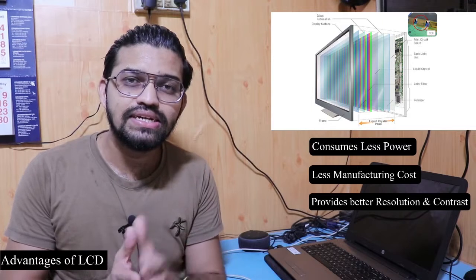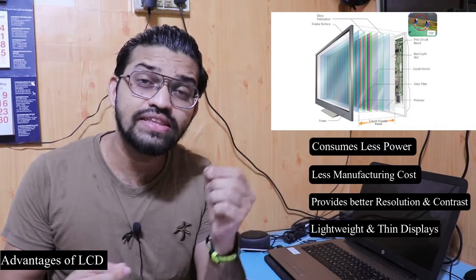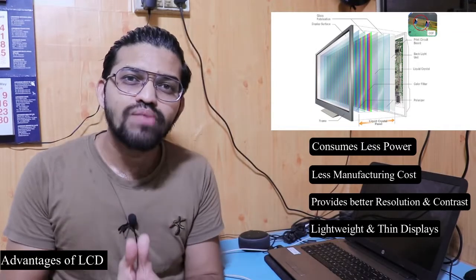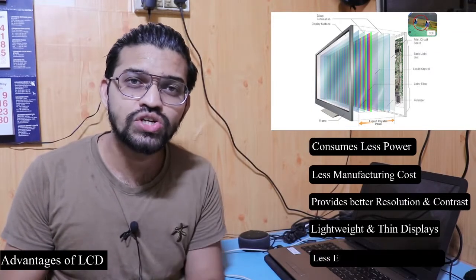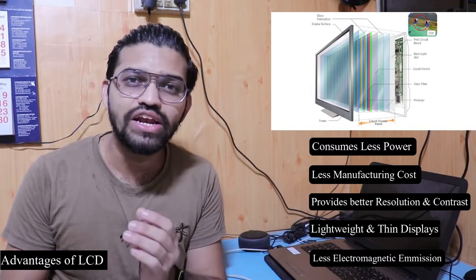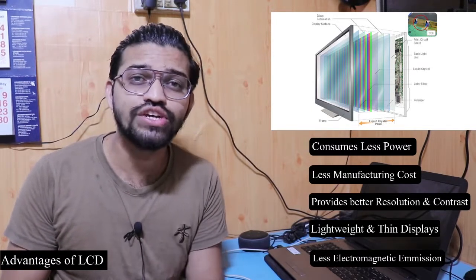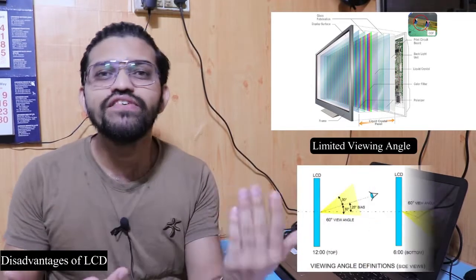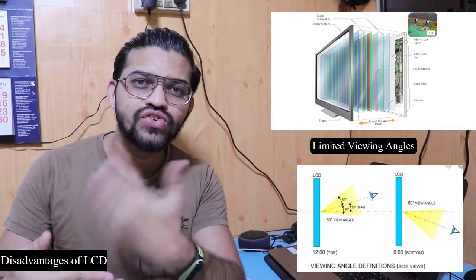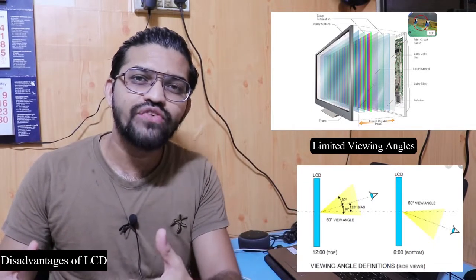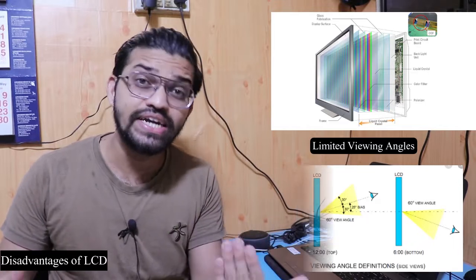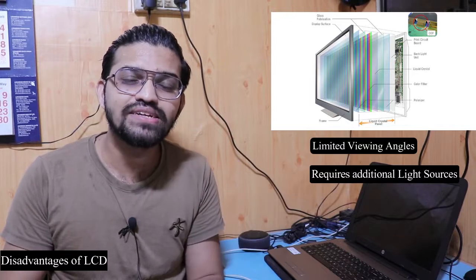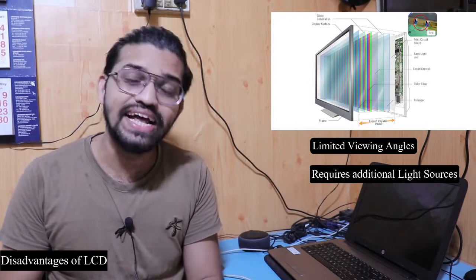LCD displays are also very lightweight and thin, which is an added advantage. In terms of electromagnetic radiation, only a very small amount of electromagnetic emission occurs with LCDs. On the disadvantage side, LCDs have limited viewing angles — you cannot comfortably view the screen from extreme angles like 120 or 170 degrees. They also require an additional light source, specifically the backlight fluorescent lamp.